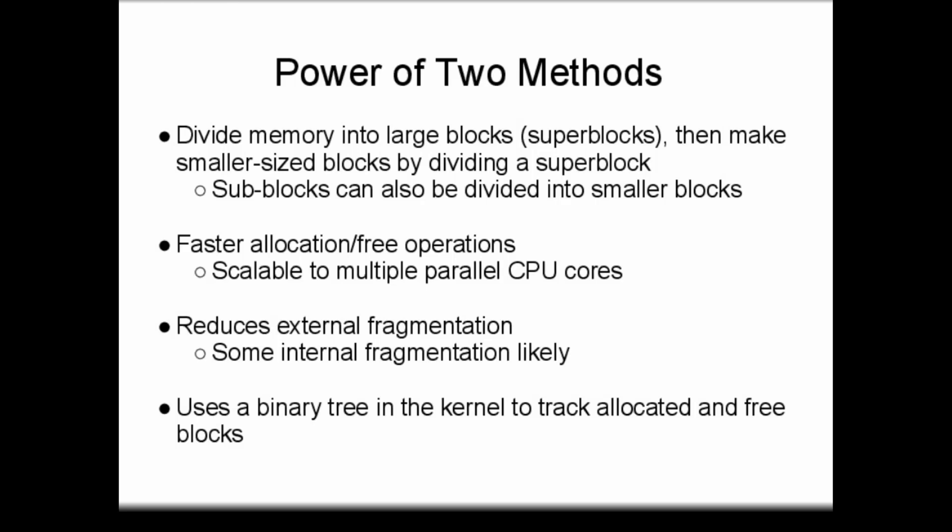At the top level, memory is divided into large blocks called super blocks. As processes request memory, these super blocks are divided into smaller sub-blocks from which the memory is allocated. Sub-blocks can be further divided, creating a hierarchy of block sizes. These algorithms are relatively fast and scale to multiple parallel CPU cores, and they reduce external fragmentation by coalescing free blocks. Some internal fragmentation does still occur, however.